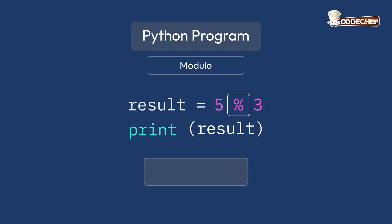Another interesting operator is the modular operator. It is used to find the remainder when you divide two numbers. When you divide 5 by 3, the quotient is 1 and the remainder is 2.